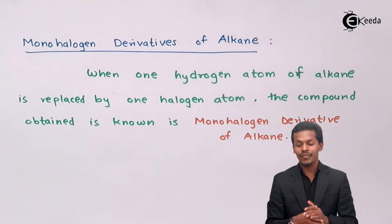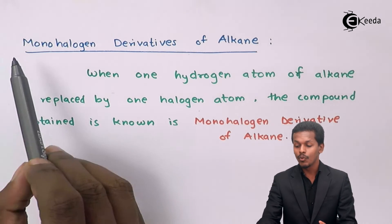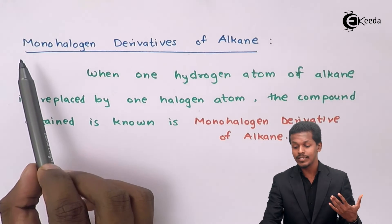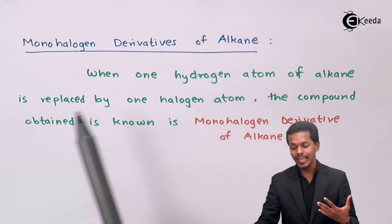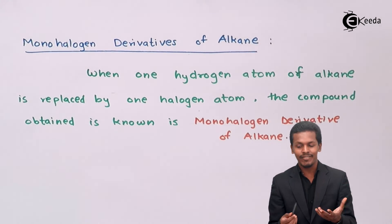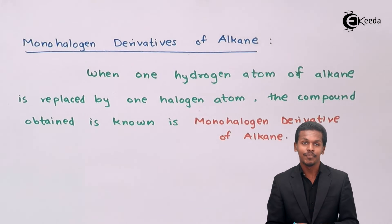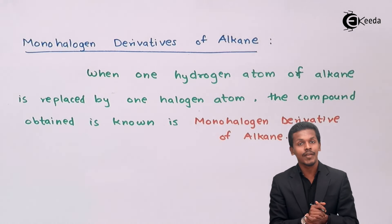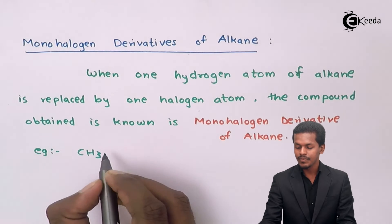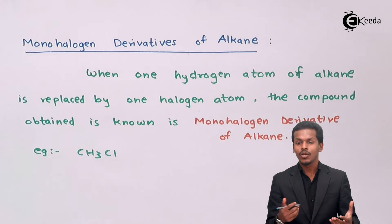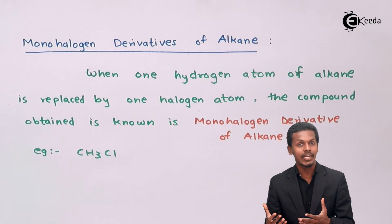Now let us understand the definition of the first classification — monohalogen derivative of alkane. When one hydrogen atom of an alkane is replaced by one halogen atom, the compound obtained is known as monohalogen derivative of alkane. For example, CH₃Cl (chloromethane) is an example that we can classify under monohalogen derivative of alkane.